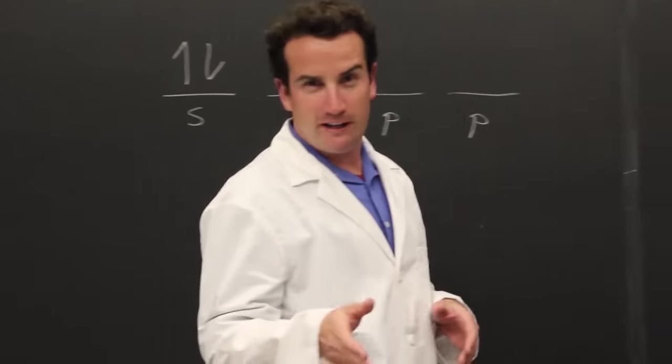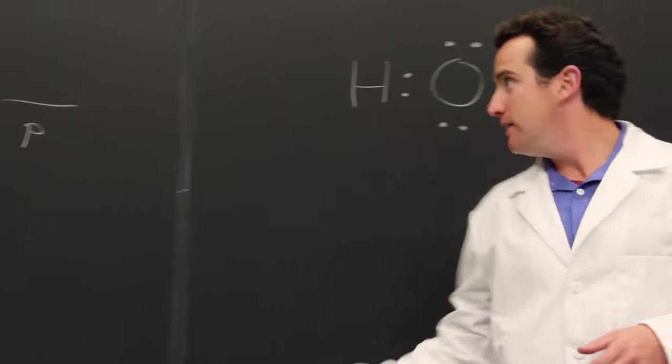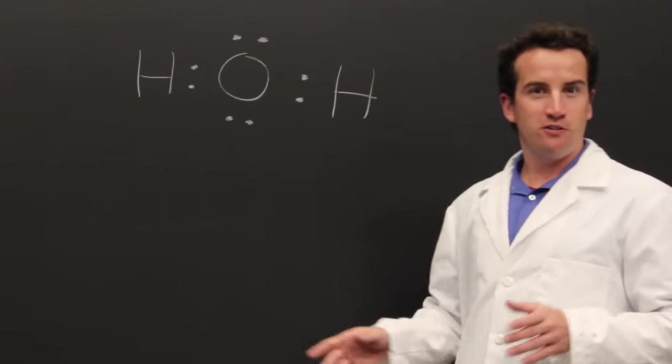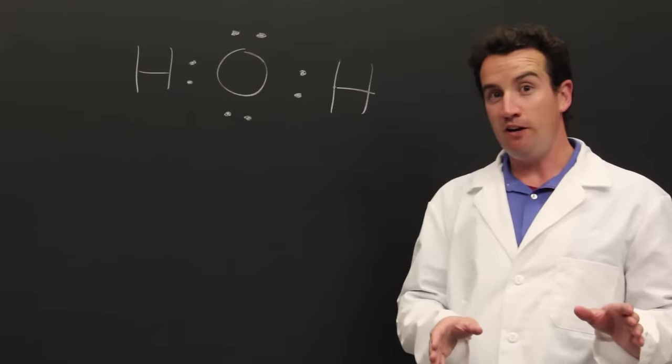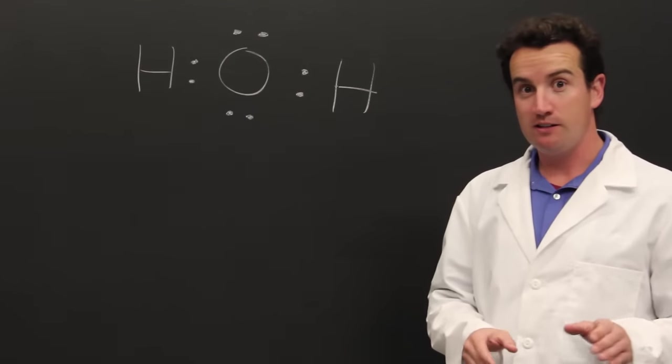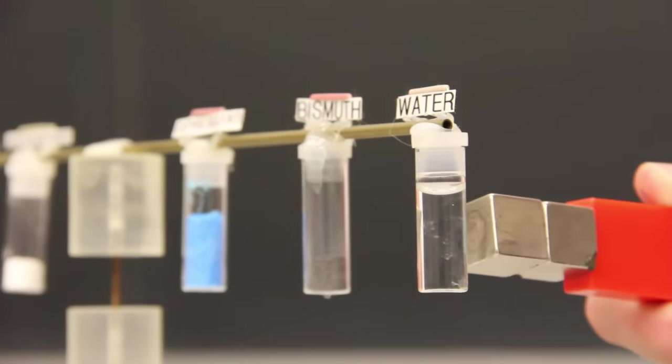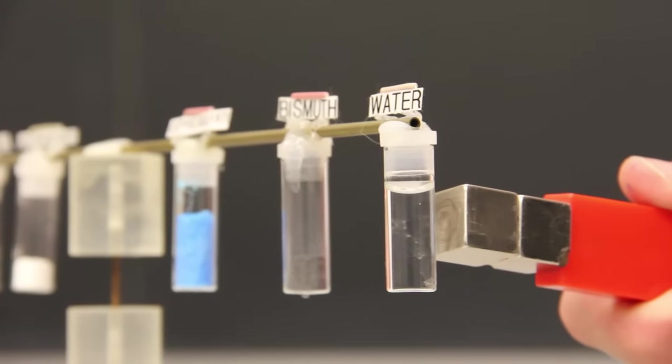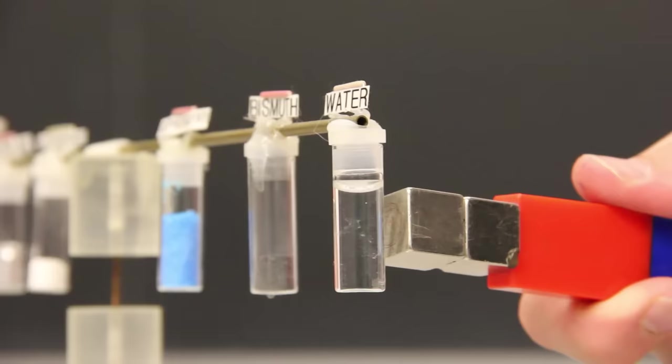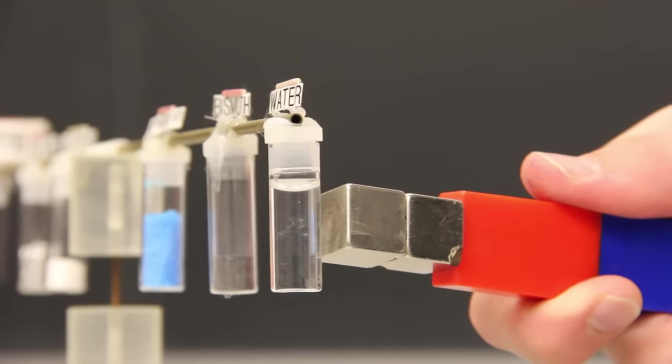But what about a diamagnet like water? Yes, the water molecule. It has all of its electrons paired. It will not be magnetized. In fact, water is repelled by a magnetic field. The electrons come to lower energy as they are moved away from the magnet.